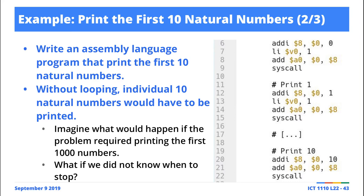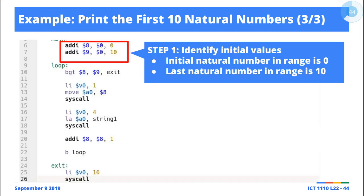We're trying to implement a program that's going to loop through the first 10 natural numbers and print them successively. The first thing you do is identify the initial values. In our case, the initial values that we identified are two of them: 0 and 10.